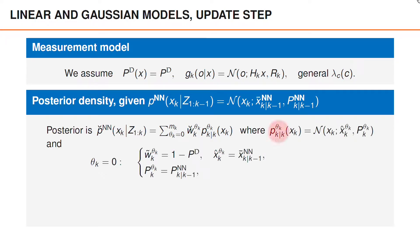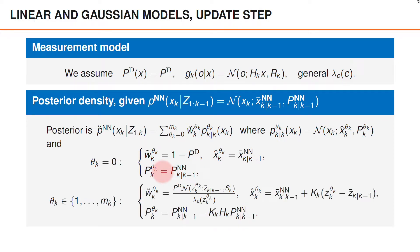Under the above assumptions, the density of x_k given theta_k is Gaussian. When theta_k is zero, its moments are the same as the moments of the predicted density. When theta_k is greater than zero, we obtain the moments of p_{theta_k} using a simple Kalman filter update, assuming that z_{theta_k} is the object measurement, whereas the unnormalized weight is p_d times the predicted likelihood of z_{theta_k} divided by the clutter intensity at z_{theta_k}.